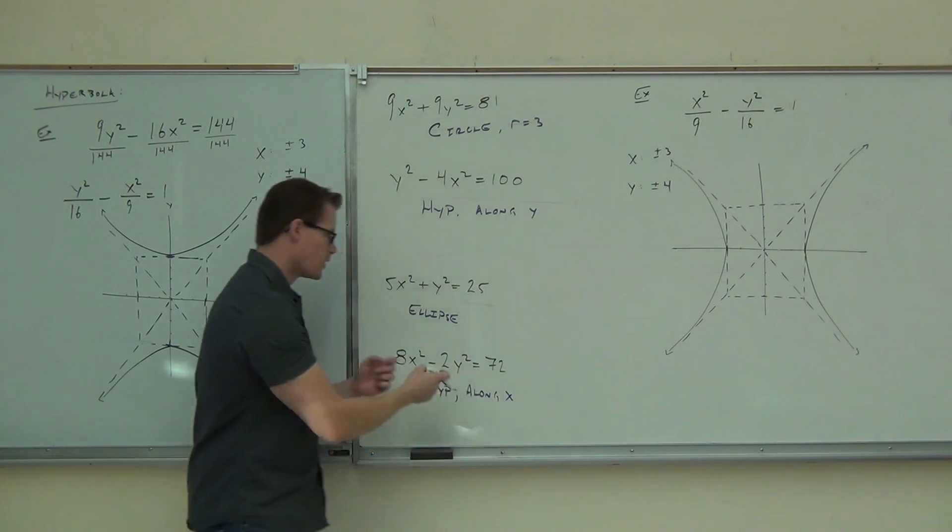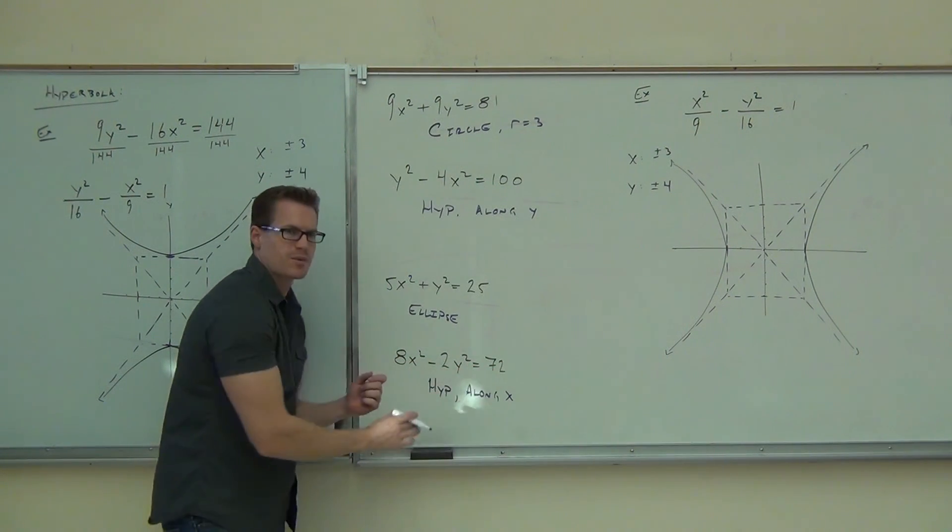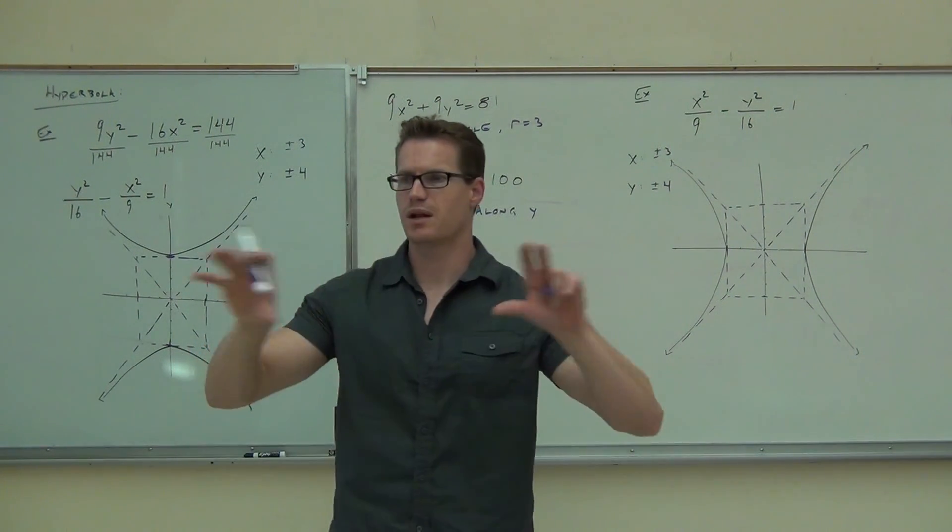That's our idea. Why? We have our minus. If we were to divide everything by 72, you could find your box. It's going to be spread along the X-axis.